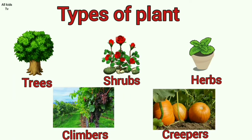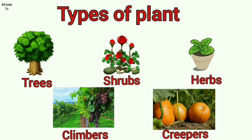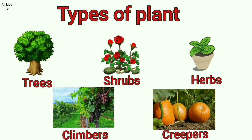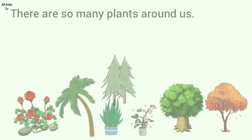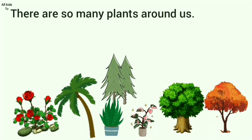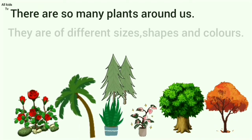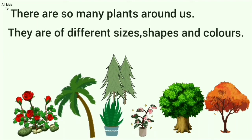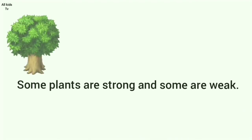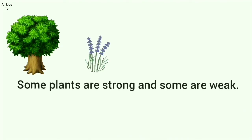Types of Plants. Hello children, today we will learn about different types of plants with examples. There are so many plants around us. They are of different sizes, shapes and colors. Some plants are strong and some are weak.